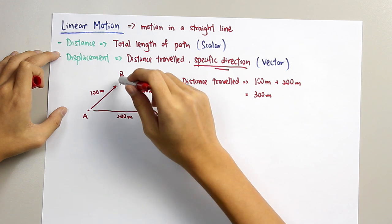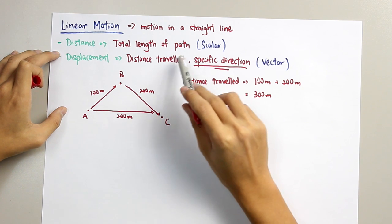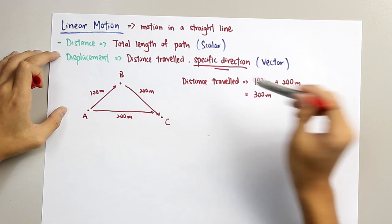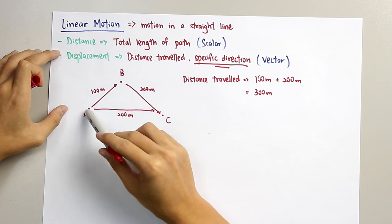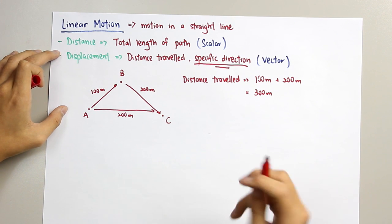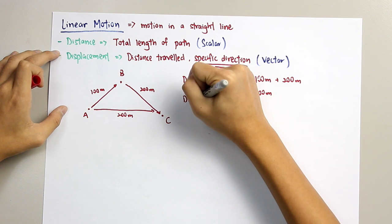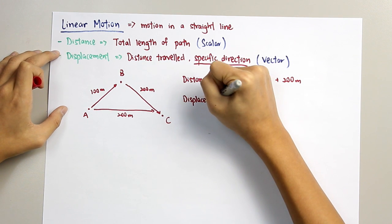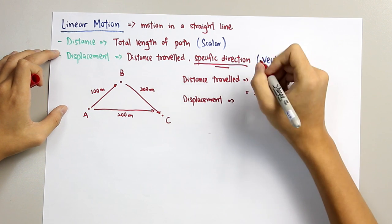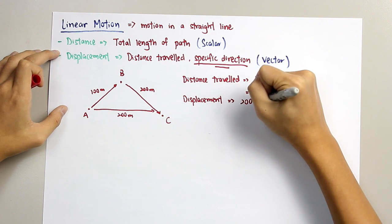If you give A to B and B to C, the definition is not valid since there are two directions. So, the displacement is 200 meters.